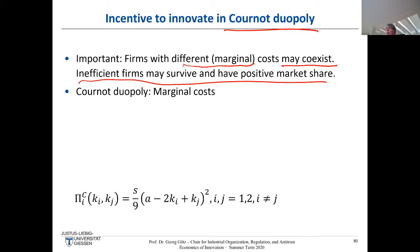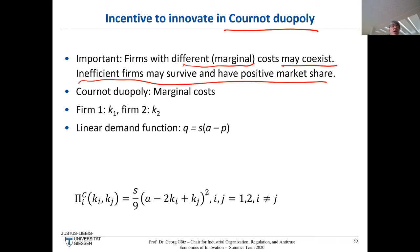An important feature of Cournot with respect to R&D is that firms with different marginal costs may coexist. So if your production costs are one euro less than your rival's, you don't drive your rival out of the market completely. Inefficient firms may survive and have positive market shares — we do not have cutthroat competition here. Firm 1 has marginal cost K1, Firm 2 has marginal cost K2.